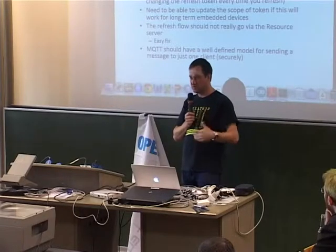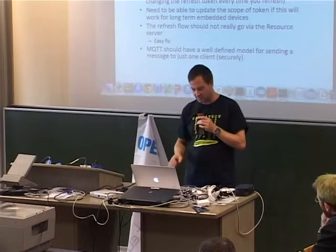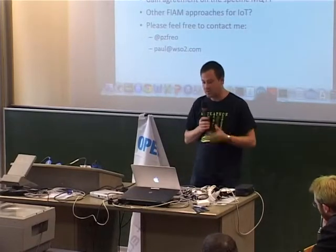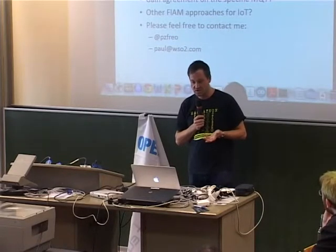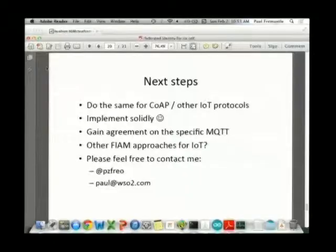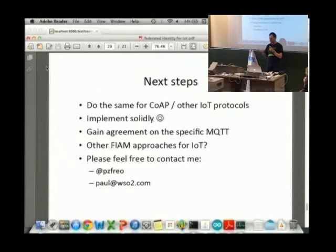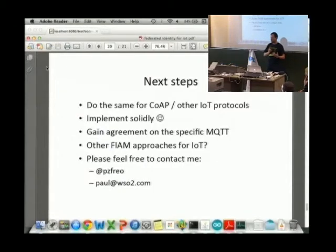There should be some kind of standard model for device-specific topics in MQTT — maybe not in the spec itself but in the general way people use it. Next steps: I want to do the same thing for the Constrained Application Protocol (CoAP) and any other IETF protocols people want. I need to fix my implementation. I think the token refresh flow for MQTT or CoAP ought to be defined the same way it is for HTTP. If anyone's interested in this or has ideas on federated identity for IoT, please contact me — I'm interested in collaborating.